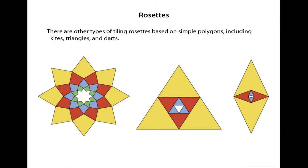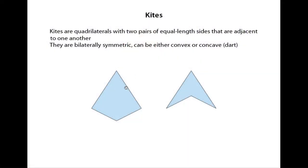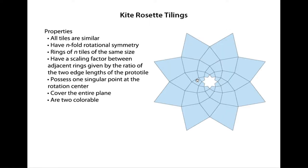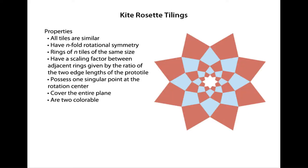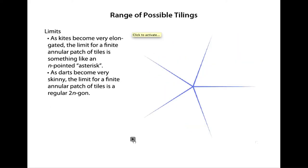I'm going to show an annular patch of an infinite tiling. It turns out these are all the same tiling. A kite has two adjacent short edges and two adjacent long edges. There are convex kites and concave ones, also known as darts. In a kite rosette, all the tiles are similar. There's a scaling factor. These things are two-colorable.